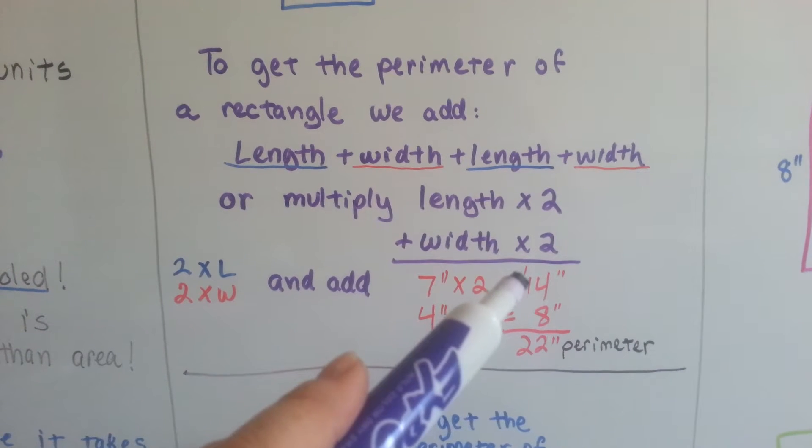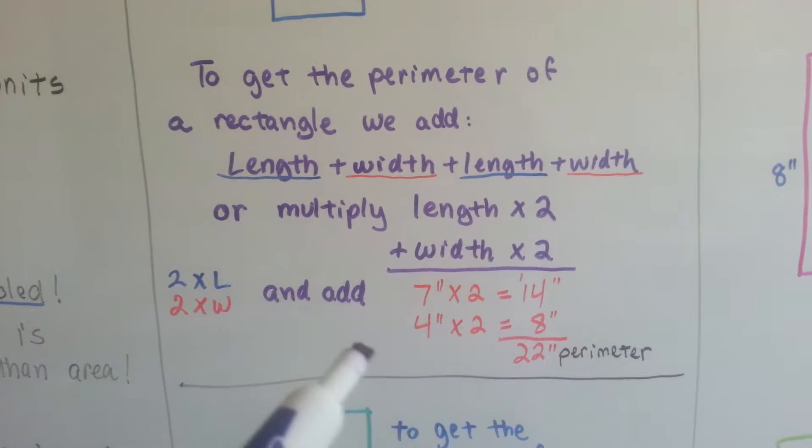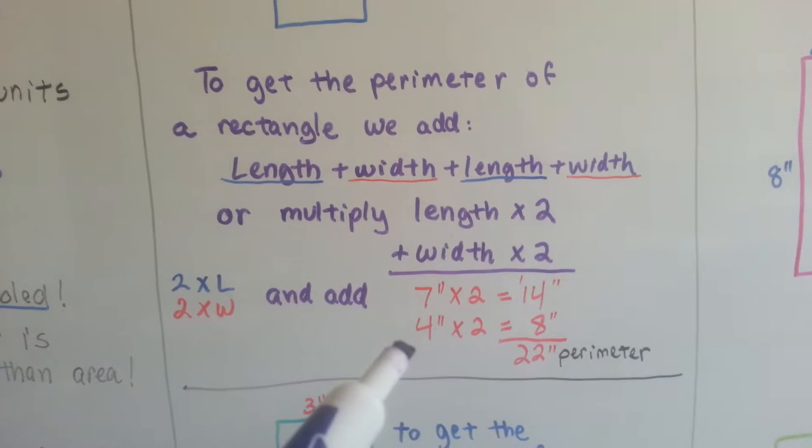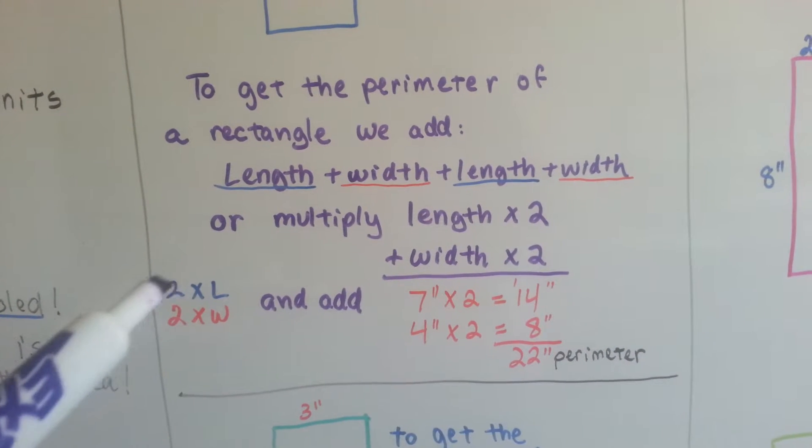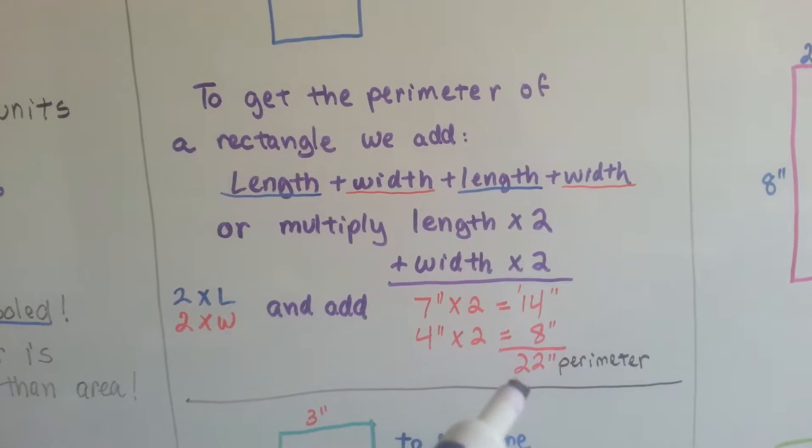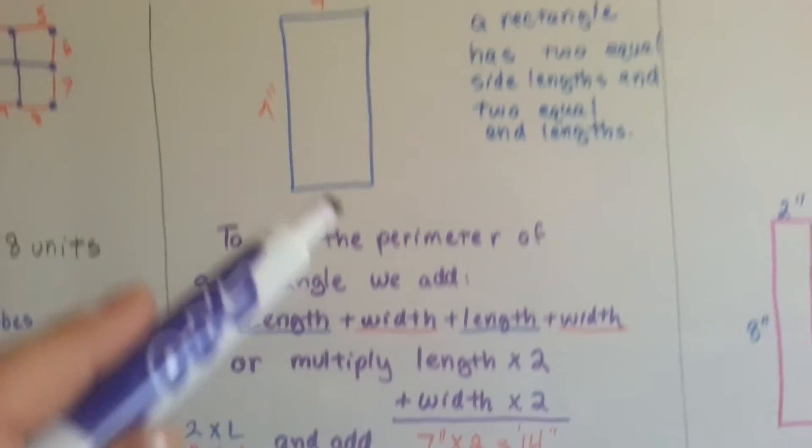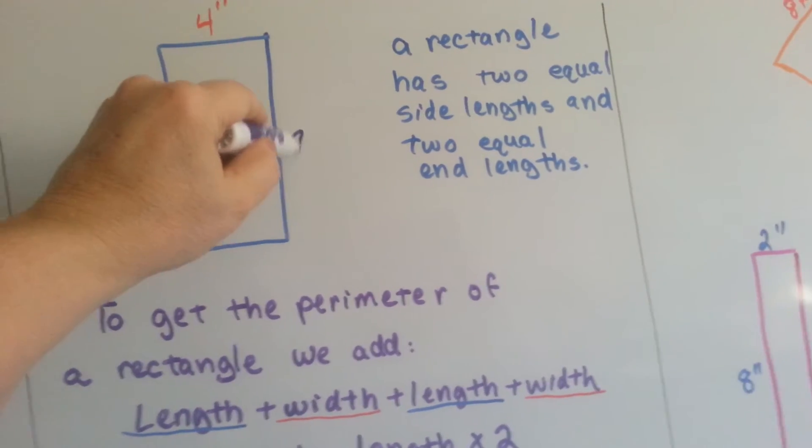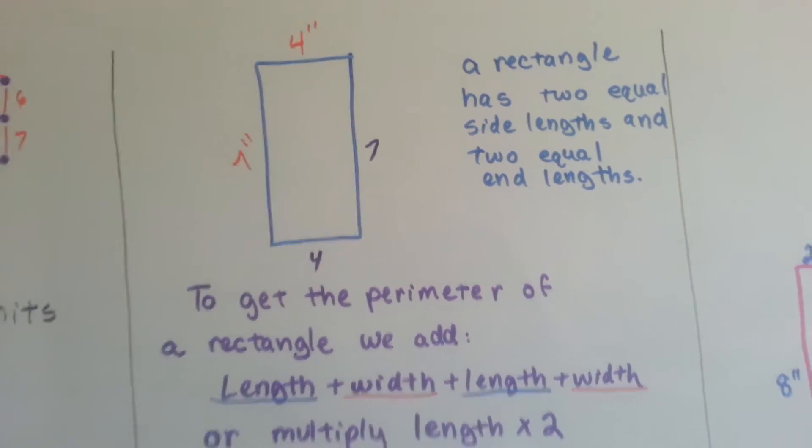So 7 times 2 is 14, that's 2 times the length, and the width is 4 times 2, which is 8. We add the 2 times the length plus the 2 times the width and we get a 22 inch perimeter. See? 14 plus 8. Because there's actually 7 here and 4 here, isn't there?